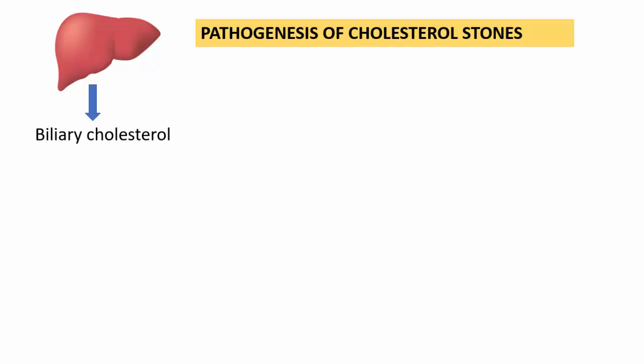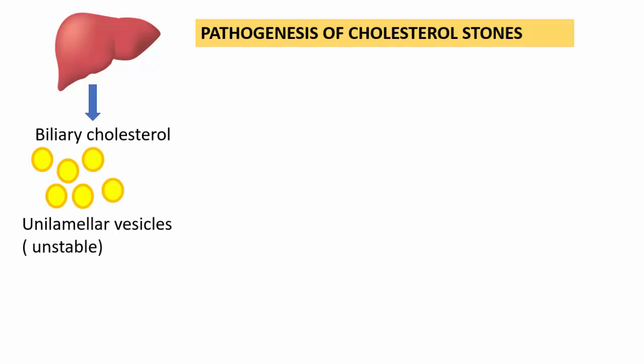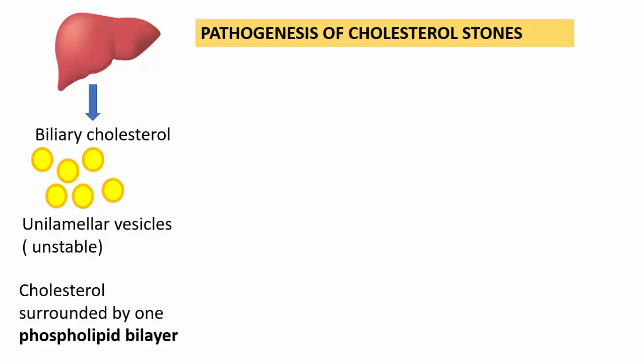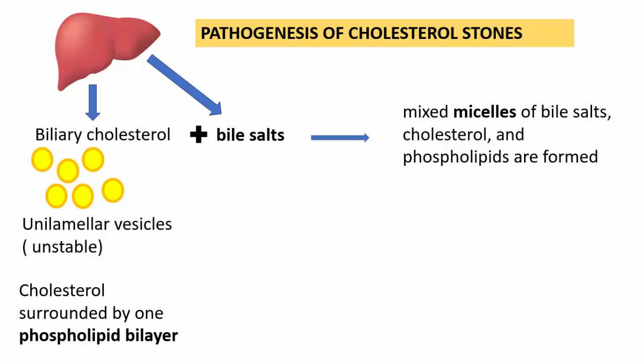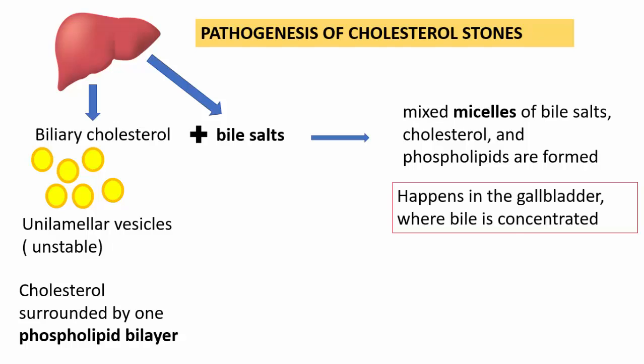We know that the liver is a source of cholesterol, which is in the form of unilamellar vesicles. These unilamellar vesicles are actually unstable — a molecule of cholesterol surrounded by one phospholipid bilayer. The liver also secretes bile salts. This biliary cholesterol in the form of unilamellar vesicles combines with bile salts, resulting in the formation of micelles — a combination of bile salts, cholesterol, and phospholipids. This event happens in the gallbladder where bile is concentrated.